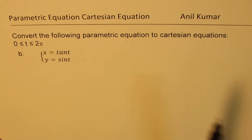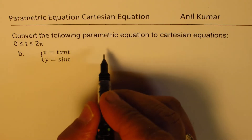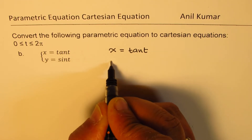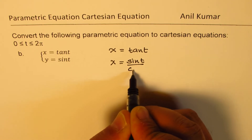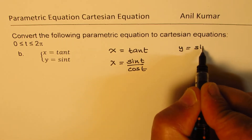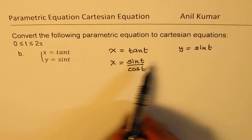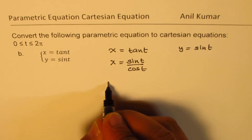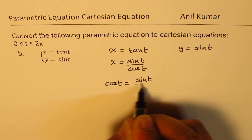Convert the following parametric equation to Cartesian. This time we have x = tan(t), which I can write as x = sin(t)/cos(t). On the other side, we are given y = sin(t), so we could replace sin t with y.